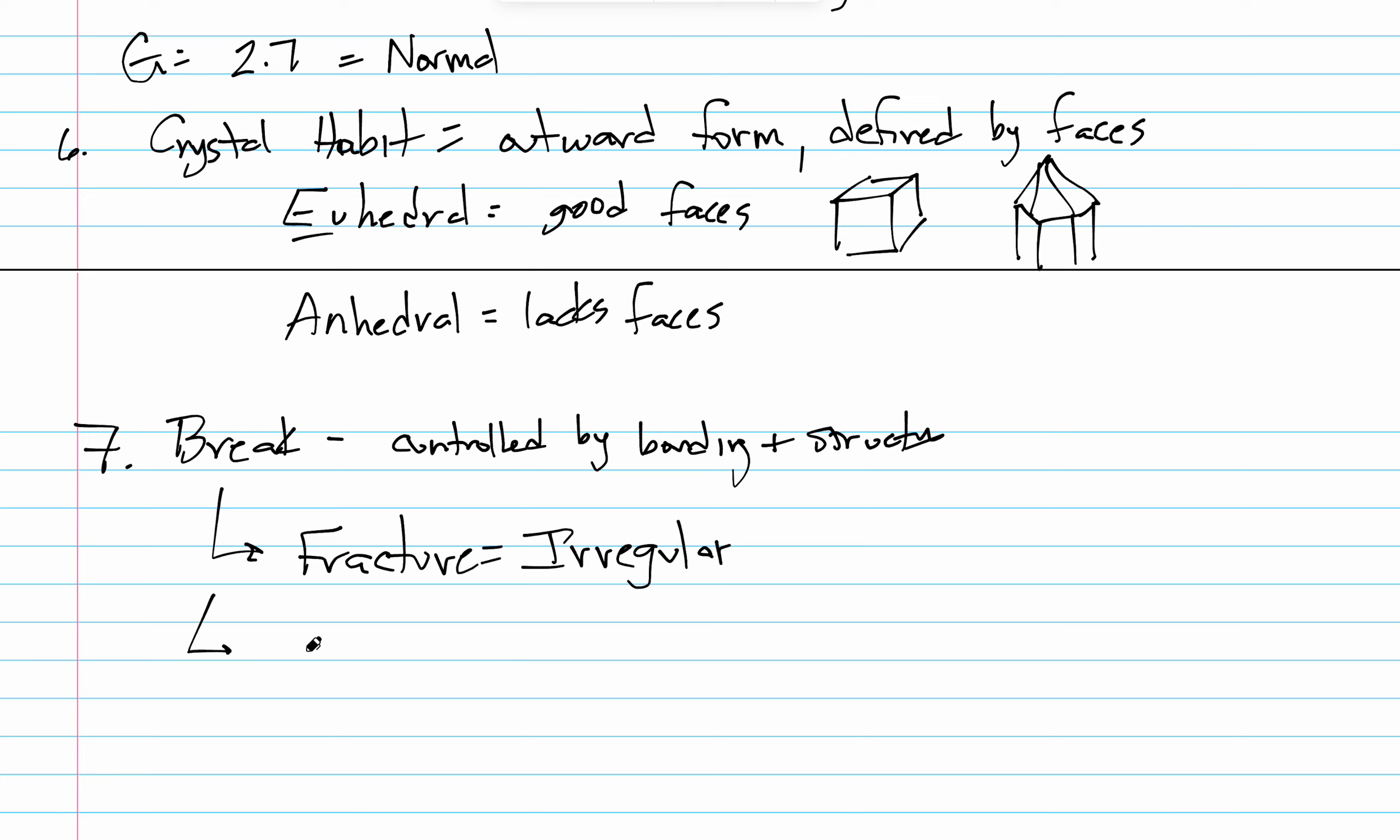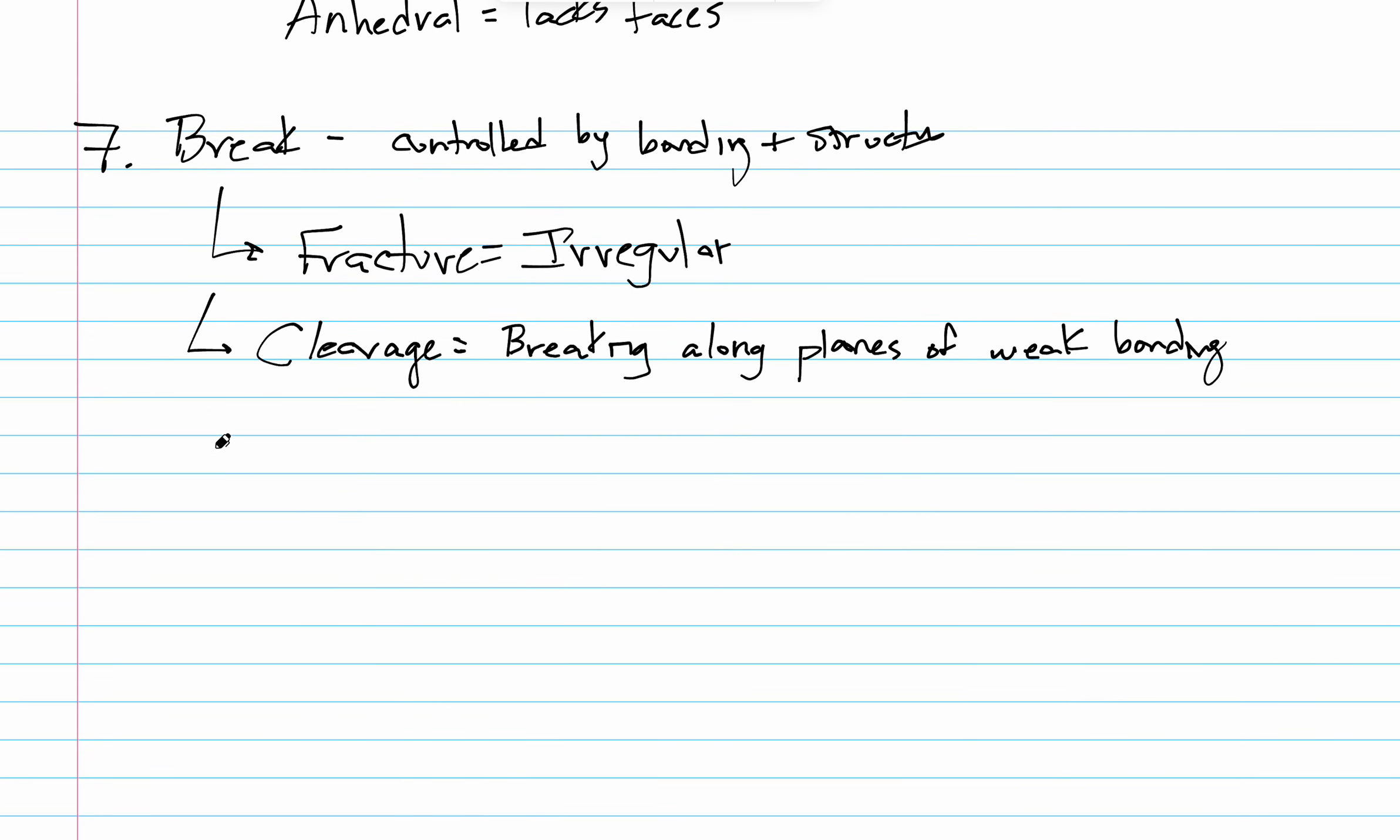But when bond strength is not the same in all directions, you can actually have directions of preferential weakness, directions of weak bonding. And that produces a type of breaking that we call cleavage. And this is really neat. We're going to say this. It's breaking along planes of weak bonding. Breaking along planes of weak bonding. I bet you've seen it before, although you might not necessarily recognize it. You've heard of the mineral mica. Well, mica minerals have a plane of weak bonding and allows it to break off in thin sheets.